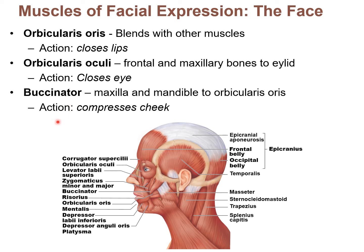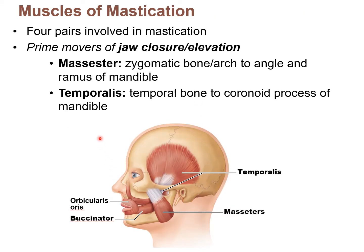We'll see the buccinator again when we go through the chewing muscles. The proper term for chewing is mastication, and there are specific muscles involved. On this first slide, we're looking at the two prime movers — the primary muscles that close your jaw. Jaw closure is called elevation. The masseter — from 'mas' for chewing — is the prime mover of jaw closure. Its origin is mostly on the zygomatic bone, and it inserts onto the body and angle of the mandible.